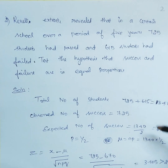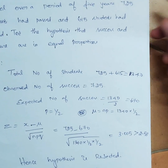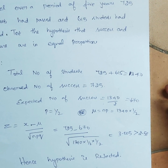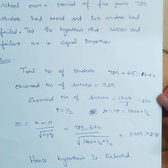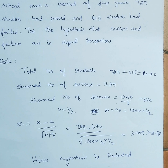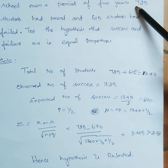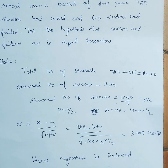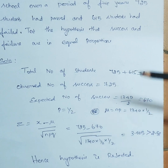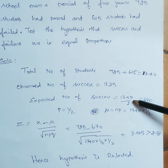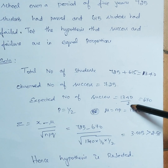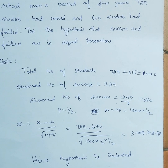The total number of students is 725 plus 615, which equals 1340. The observed number of successes is 725. The expected number of successes — since success and failure should be equal in proportion — is 1340 divided by 2, which gives 670.